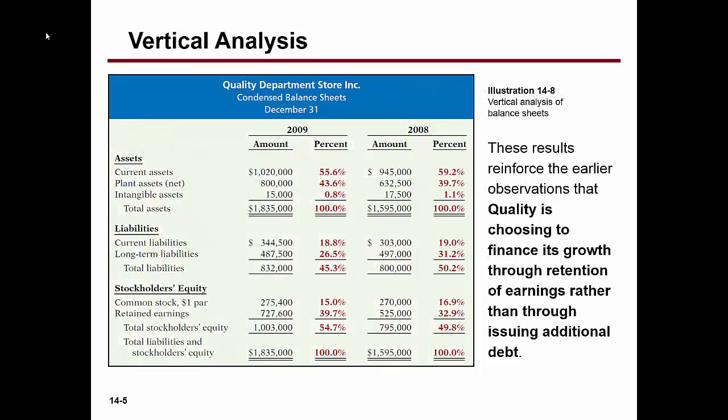Vertical analysis means we go down the financial statements to do our analysis. We typically pick a base and then calculate how the line items make up that base. So if we're using total assets as our base, we take current assets — $1,020,000 — and divide by total assets of $1,835,000.